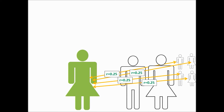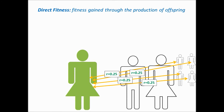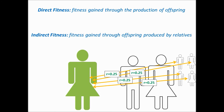We have discussed the number of offspring as a good measure of biological fitness — this is a measure of direct fitness. Another way to think about biological fitness is the abundance of your genes in the next generation. In this sense, the reproductive success of your relatives can provide you with indirect fitness gains, even if you don't reproduce yourself.